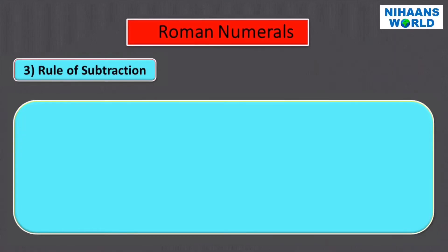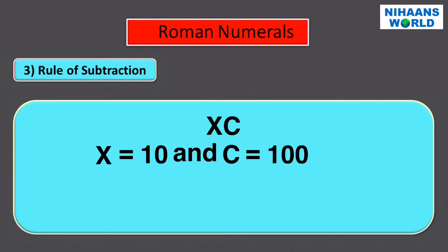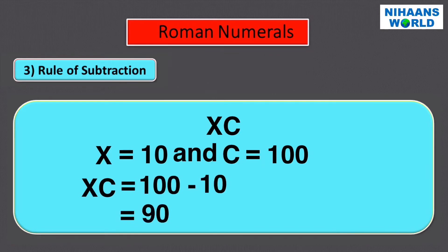Rule of Subtraction one: If a symbol of smaller value is to the left of a symbol of higher value, we subtract the smaller value from higher value. For example, let's take the number X C. X has the value of ten and C has the value of one hundred. So, X C will be one hundred minus ten, which is equal to ninety.